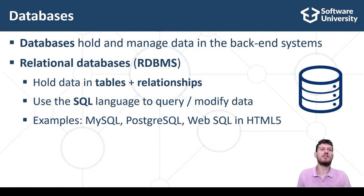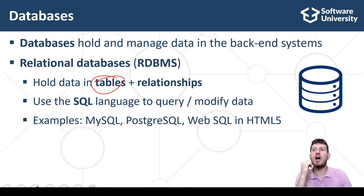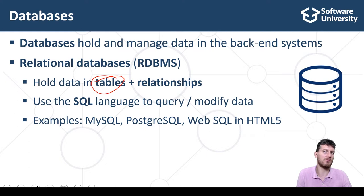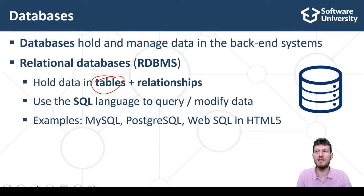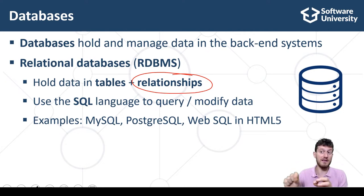Relational databases organize data in tables and data rows. For example, an e-commerce system could have a table holding the products. Each table row could hold product ID, product name, description, vendor and price. Some tables in a DBMS system maintain relationships between them — for example, one vendor has many related products and each product has a vendor. This is called a one-to-many relationship.